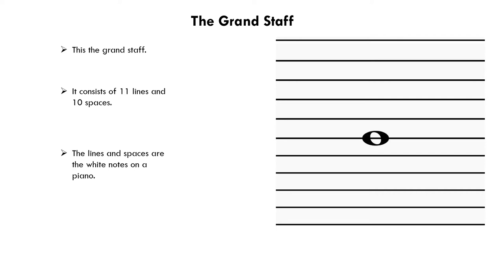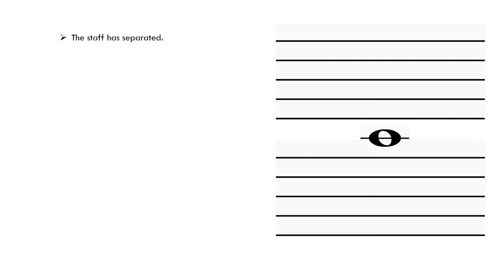You'll now be able to see a note that has just appeared on the grand staff. This note is called middle C. It gets its name as it sits on the middle line. If we now take away the middle line that the note is set upon, you can see that they have now separated into two different staffs — a modern staff of five lines and four spaces which these staffs now have.